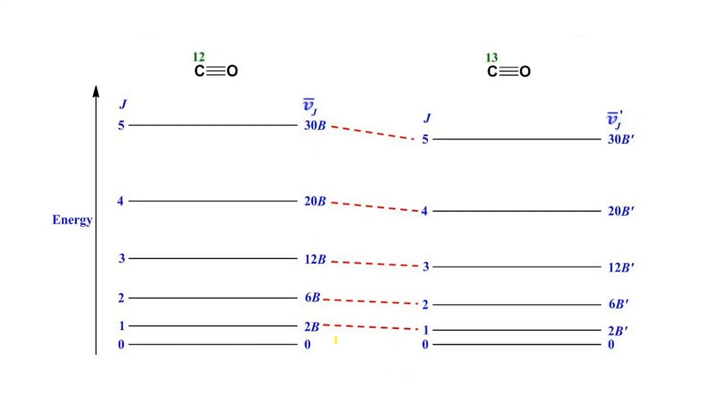At J = 0, both ¹²CO and ¹³CO have the same zero energy. But as J increases, there is a slight decrease in the energy levels for ¹³CO compared to ¹²CO, because B is smaller for the heavier isotopologue.